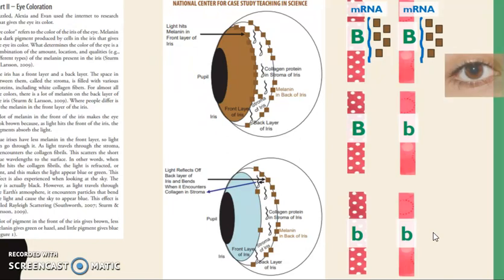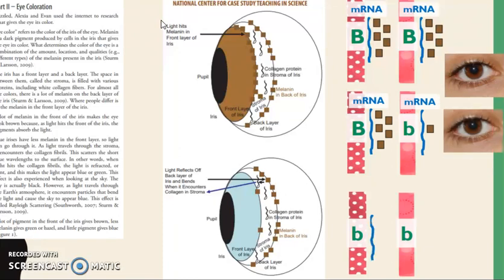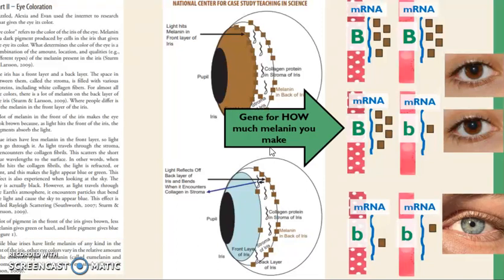If a person inherits a dominant allele, they have a lot of melanin protein being made in their eye. You can see from this case study how at the front they have lots of melanin, where in blue-eyed people they don't. Our genes aren't saying the type of melanin, but rather how much melanin you make. A blue-eyed person doesn't make blue pigment and a brown-eyed person make brown pigment. Instead, a blue-eyed person just makes less pigment, so when light strikes the iris, the way it bounces off collagen fibers causes the light to reflect as blue.